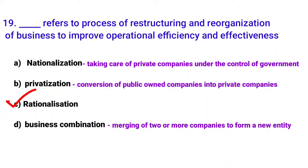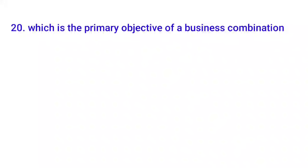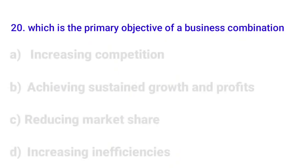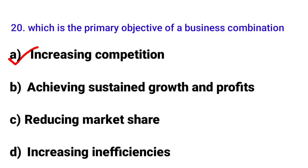Twentieth MCQ: 'Which is the primary objective of a business combination?' Business combination brings many benefits to the company. Option A describes some benefit that is not the primary one. Business combination is done primarily to grow profits and market position.